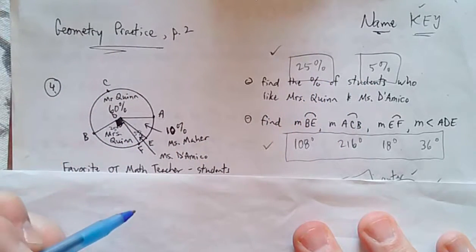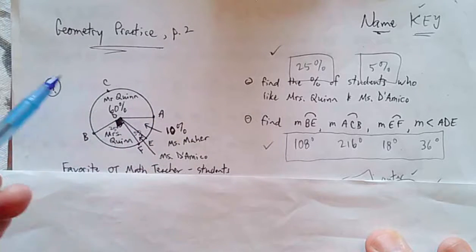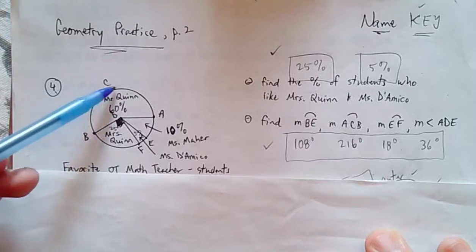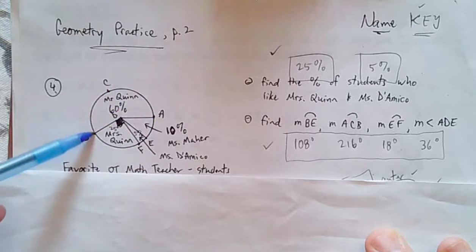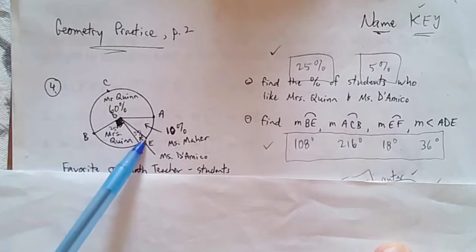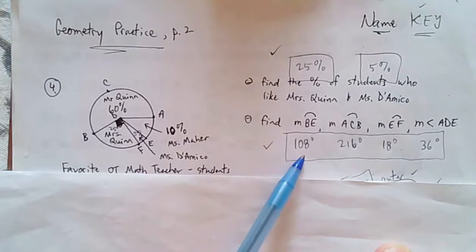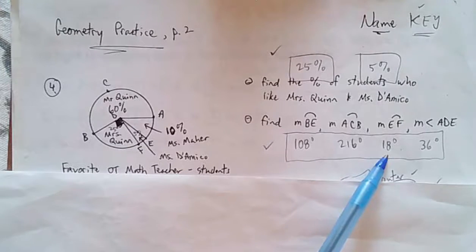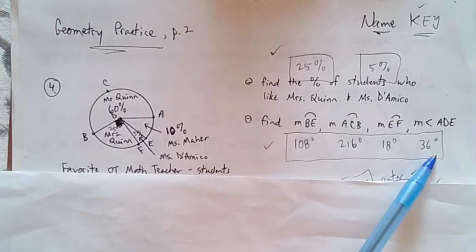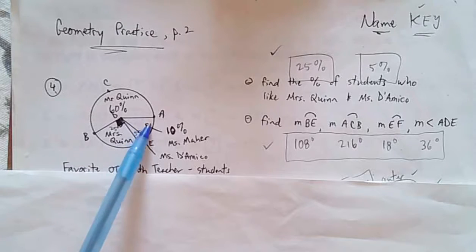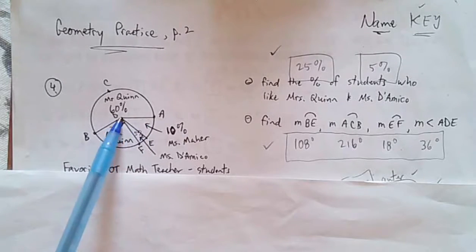And then finding the arcs. Again, you're using the percentage. ACB is 60% of 360 degrees, which is 216. BE is 30% of 360. EF is 5% of 360. And ADE is 30% of 360. ADE is an angle, it's a central angle. 10% is 36 degrees, so the angle is 36 degrees.